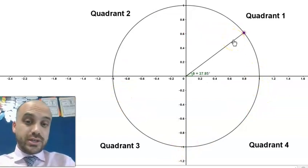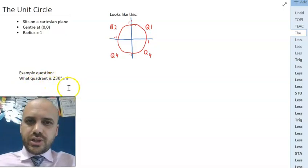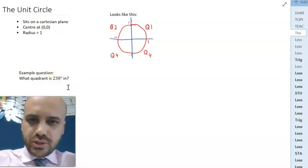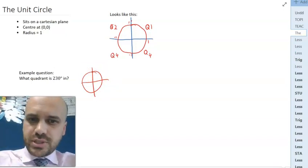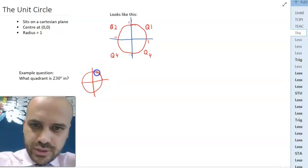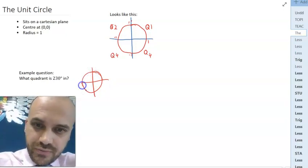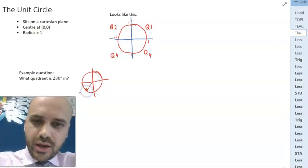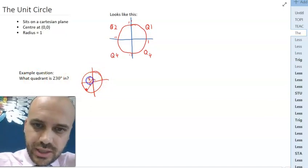So a question I might ask you: what quadrant is 230 degrees in? Looking at your unit circle, let's draw another one. You'll get real fast at drawing unit circles. You could say, okay start here, rotate, that's 90 degrees. Rotate some more, that's 180 degrees. Rotate some more, another 50 degrees and you'll be here. So it looks like 230 degrees is this angle here which means that we're in quadrant 3.